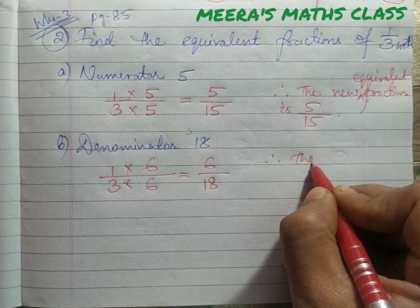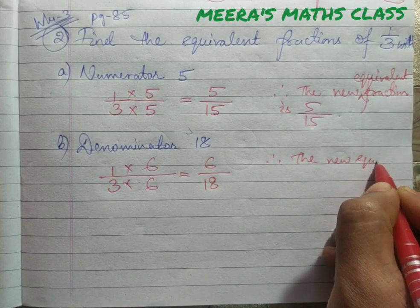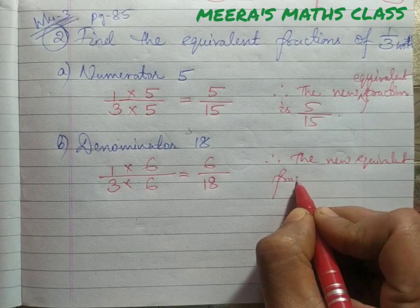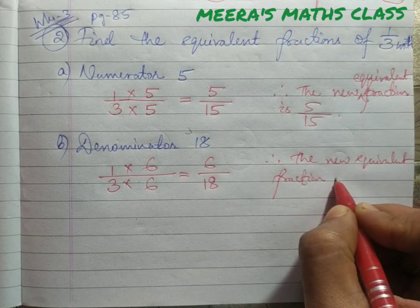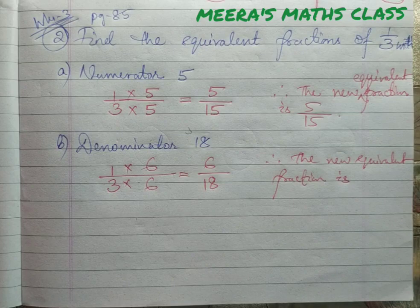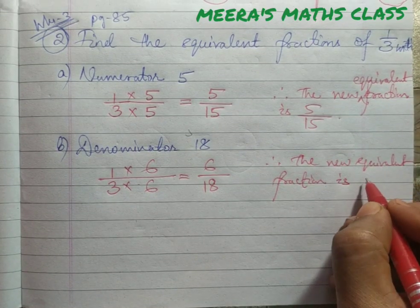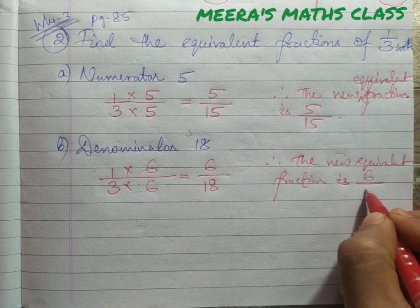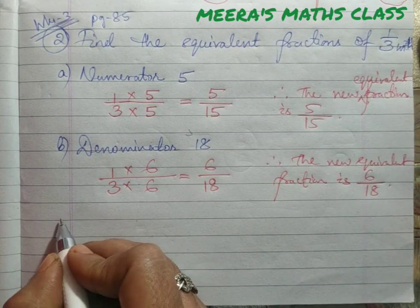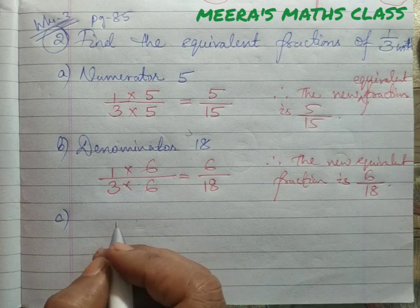Therefore, the new equivalent fraction is 6 by 18. Let's go to the next one — part c, numerator 11.